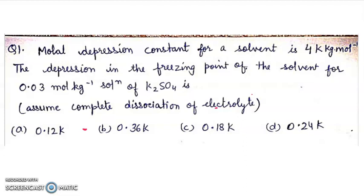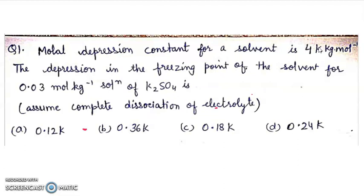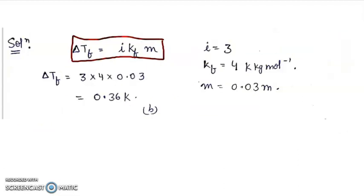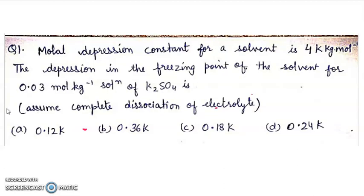So, the formula of depression in freezing point is delta Tf equals I Kf m. I is Van't Hoff factor, Kf is constant which is 4, and small m is molality which is 0.03. K2SO4 has Van't Hoff factor of 3 because it has total of 3 ions.